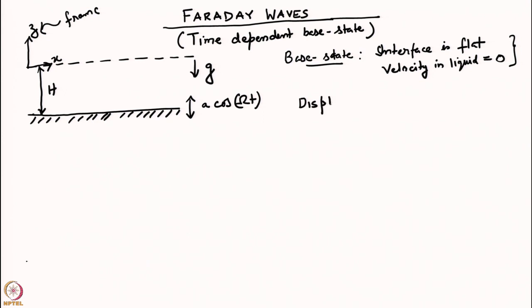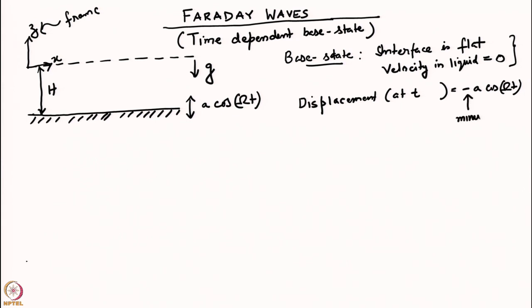In this frame of reference, in addition to gravity, we also see a body force due to the oscillatory motion up and down. We choose the displacement so that at any time it is given by minus a cos(omega t). This minus sign is purely for convenience — choosing plus a will give the same Mathieu equation with the same stability properties.